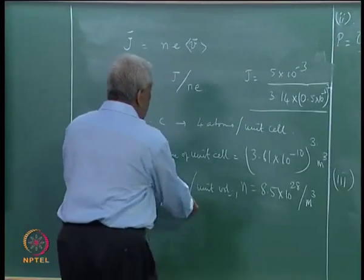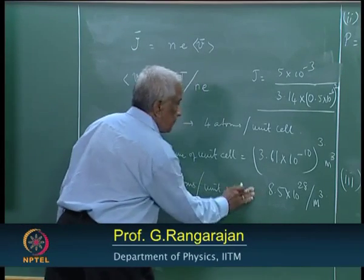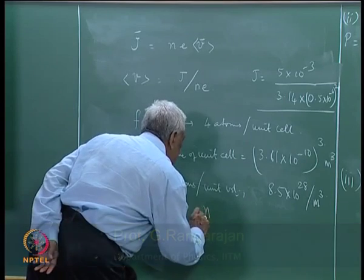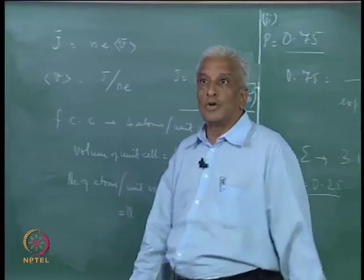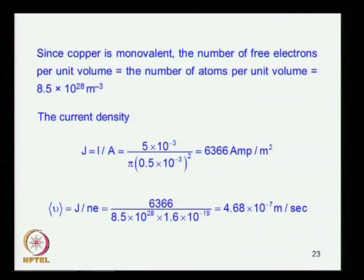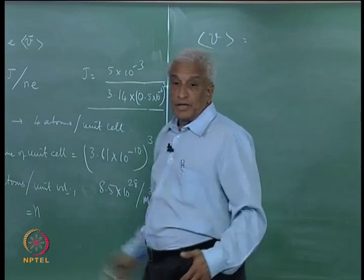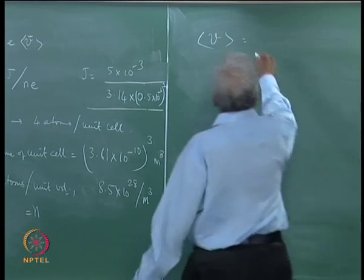And since copper is monovalent, the number of electrons is just equal to this. Therefore, we have the current density, we have this, we know the electronic charge. So, we can readily calculate the drift velocity, which turns out to be, by substitution, a value of 4.68.